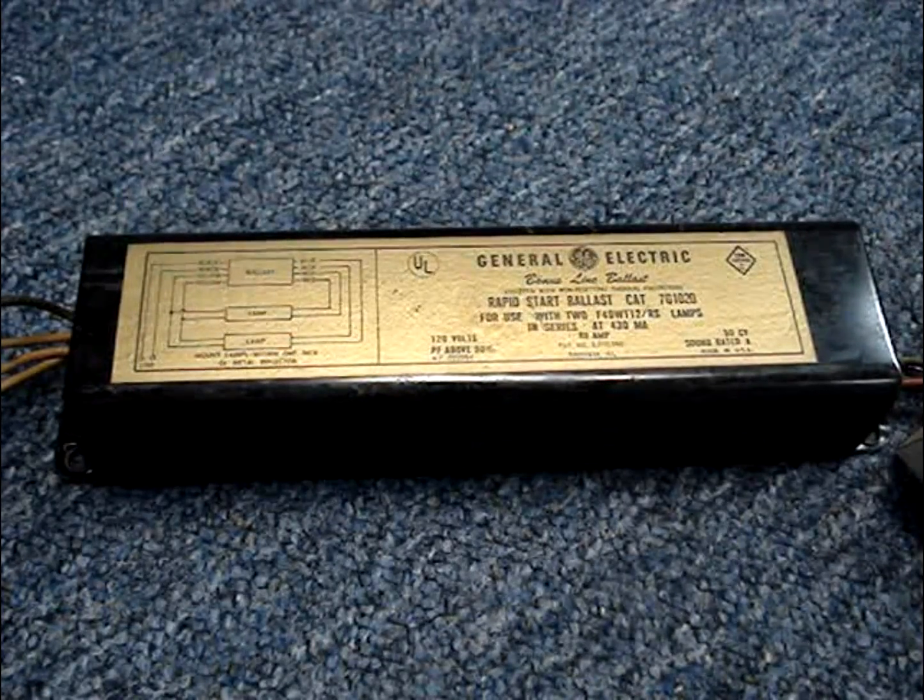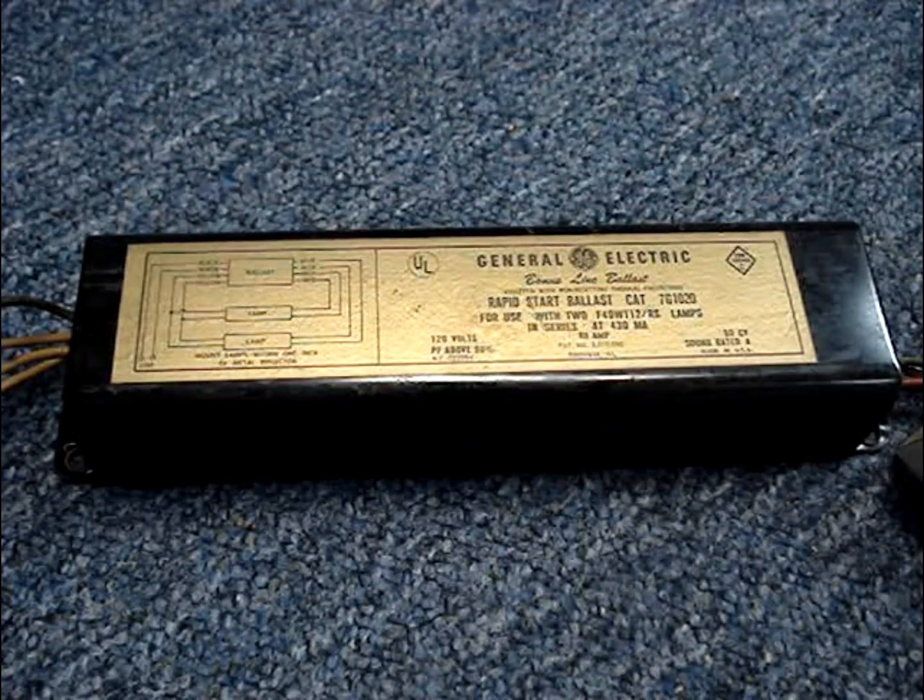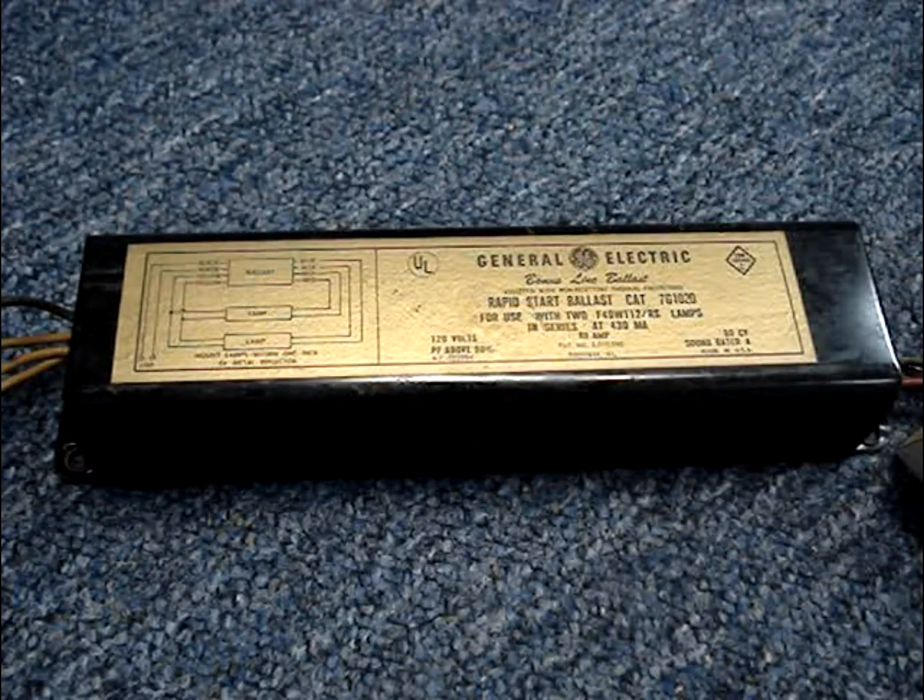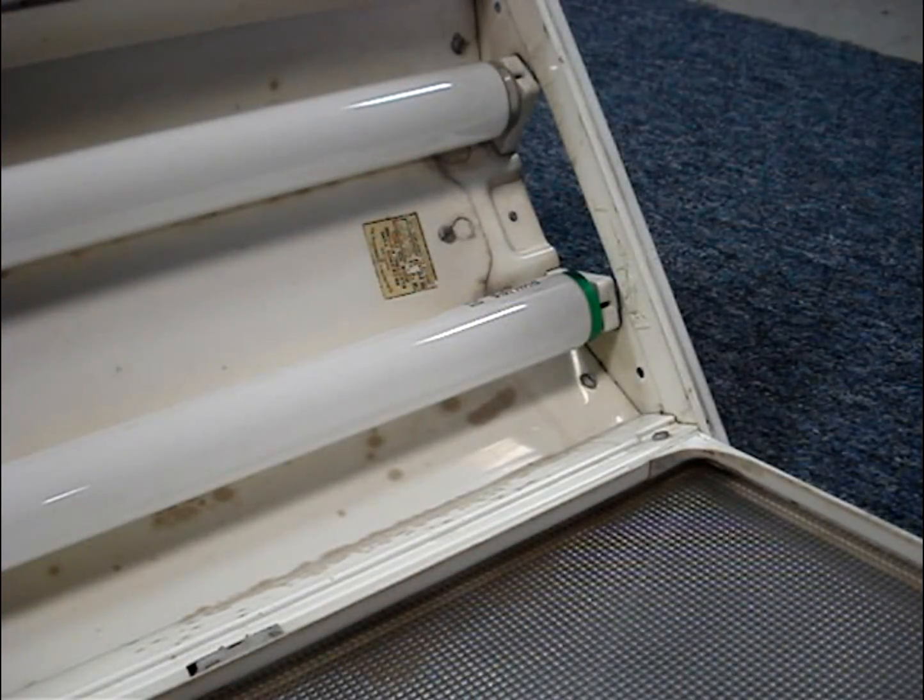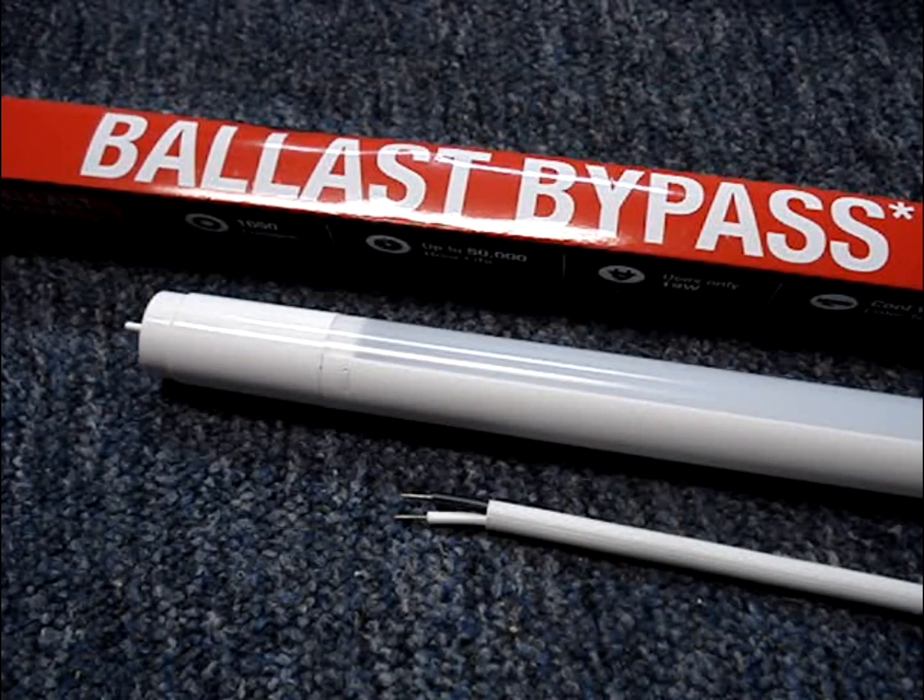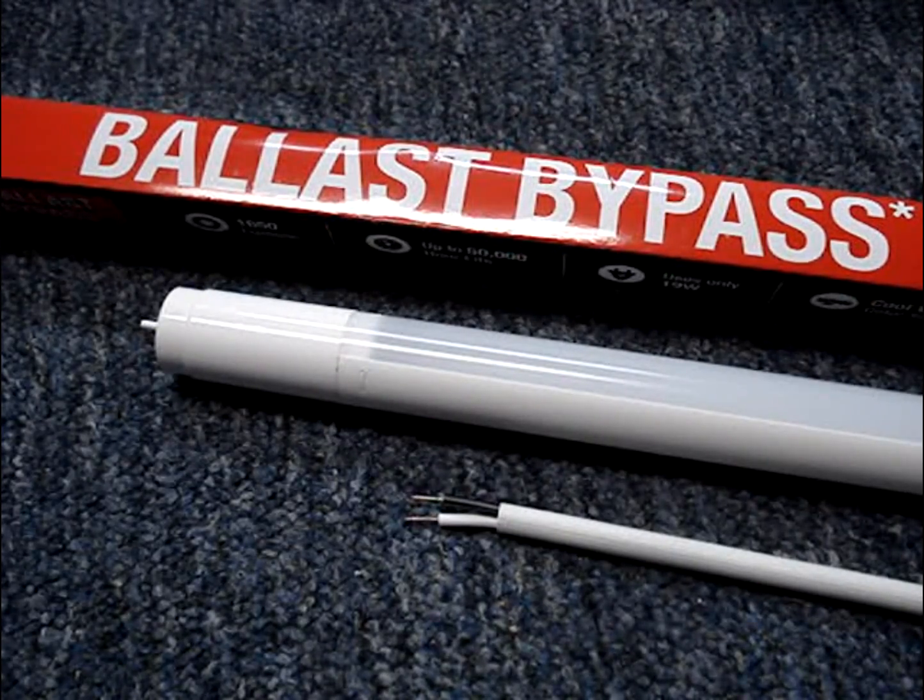Some people say that depending on the type of ballast, the plug-in play tubes may not offer a huge energy savings. The focus of this video is to replace T8 or T12 fluorescent tubes with bypass electric ballast bypass LED tubes. These tubes best suited my needs.